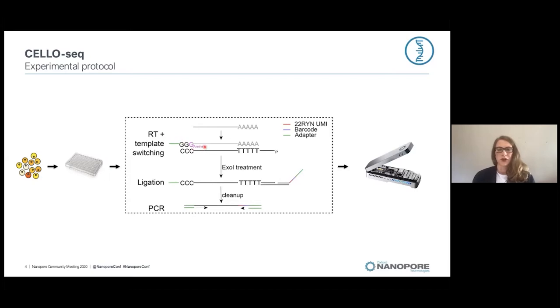The template switch oligo is blocked to avoid spurious priming. We then ligate onto the first strand cDNA a splint oligo, which has an RYN-patterned unique molecular identifier as well as a cellular barcode.